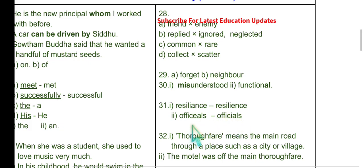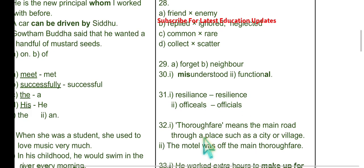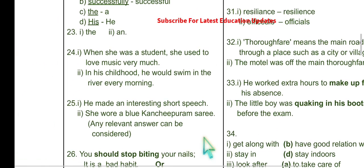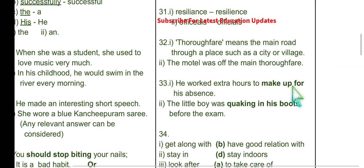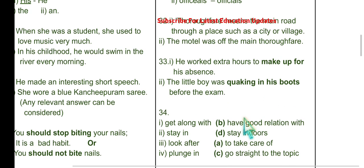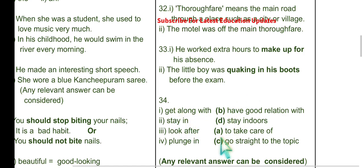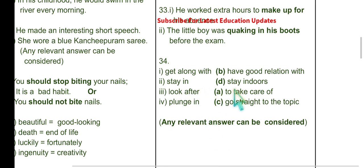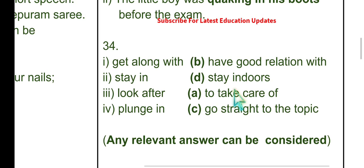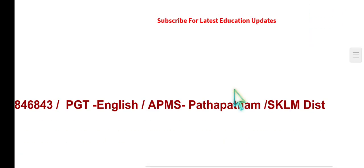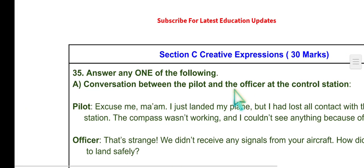Opposite words include: friend → foe or enemy; replied → ignored or neglected; asked → common; special → rare; collect → scatter or distribute; forget → remember; misunderstanding → understanding. Question on functional resilience in Telugu context noted. Question 34: B, D, A, C. Question 35: 'Get along with' — these are the right matching expressions. Any relevant answer can be given marks.